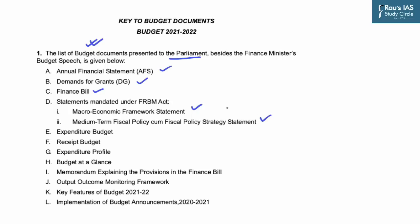The Ministry of Finance, along with the Annual Financial Statement, also presents certain key budget documents to Parliament. These include: the Annual Financial Statement, Demand for Grants, Finance Bill, and statements mandated under the Fiscal Responsibility and Budget Management Act — namely the Macroeconomic Framework Statement and the Medium-Term Fiscal Policy cum Fiscal Policy Strategy Statement. UPSC asked a question in the 2020 Prelims on this aspect.